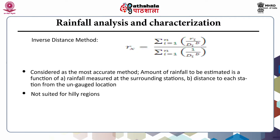The fourth method is the inverse distance method, considered as the most accurate in comparison to the other methods. Here, the amount of rainfall is estimated at a location as a function of rainfall measured at the surrounding stations and the distance to each station from the ungauged location. Rainfall RX at station X is given by RX = Σ(i=1 to N) Ri/Di^B / Σ(i=1 to N) 1/Di^B, where B = 2 is commonly used. As the weighting is strictly based on distance, this method is not satisfactory for hilly regions.